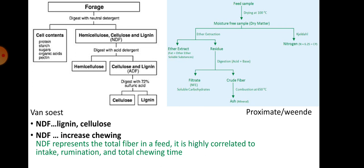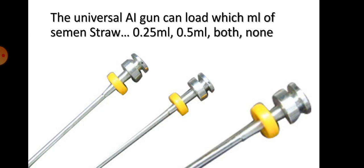Neutral detergent fiber (NDF) represents the total fiber in the feed and is highly correlated with feed intake, rumination, and total chewing time. NDF can increase chewing. The universal AI gun can load both 0.25 mL and 0.5 mL AI straws.